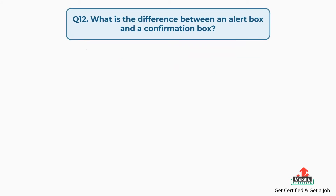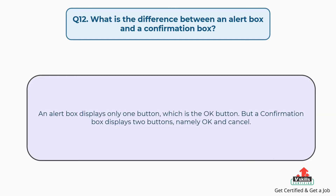Question number twelve: what is the difference between an alert box and a confirmation box? An alert box displays only one button, which is the OK button. But a confirmation box displays two buttons, namely OK and Cancel.